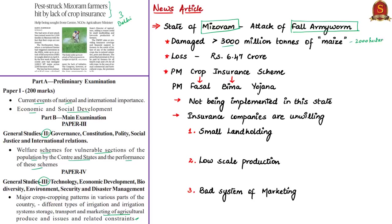It is estimated that the loss could be around 6.47 crore rupees. The fall army worm is an insect native to tropical and subtropical regions of the Americas. Its larval stage causes more damage as it feeds on more than 80 plant species, including maize, rice, sorghum, millet, sugarcane, vegetable crops and cotton. Fall army worm can cause significant yield losses if not well managed. On 8th May, we had a related news about this fall army worm infecting crops in Mizoram and also in Adilabad in the state of Telangana. For more information, refer to our 8th May The Hindu News Analysis — the link is provided in the description section below.